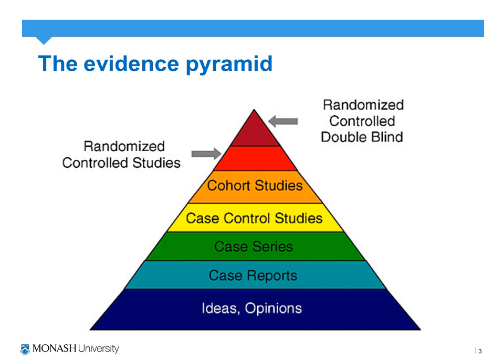Here we have the evidence pyramid in which we have the randomised control trial at the top followed by the cohort study. Unlike the randomised control trial, the cohort study can only account for three of the four biases — that is performance, attrition, and detection bias.